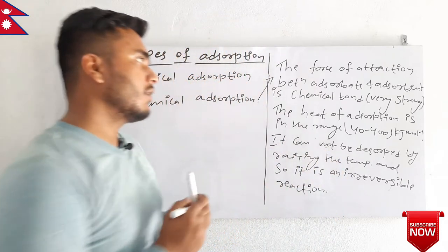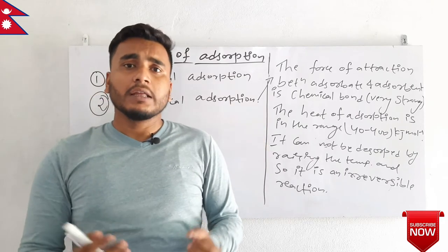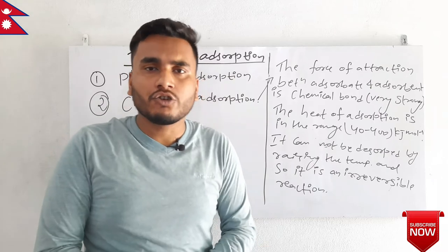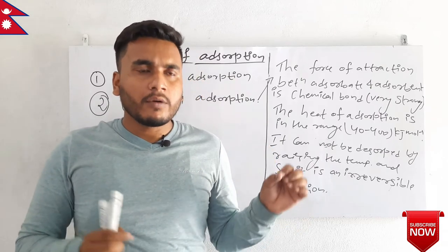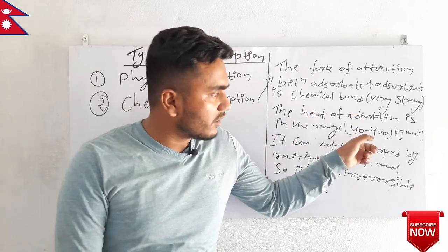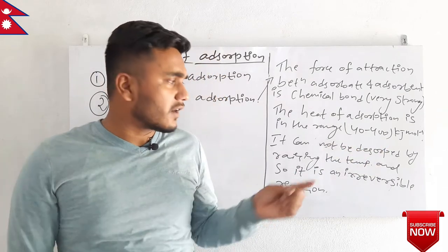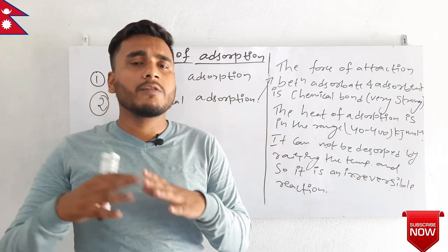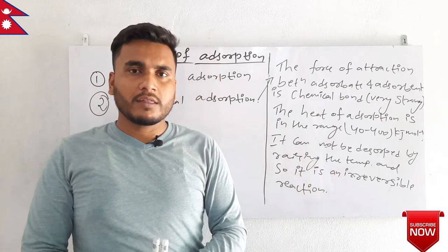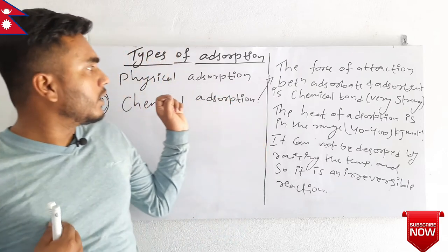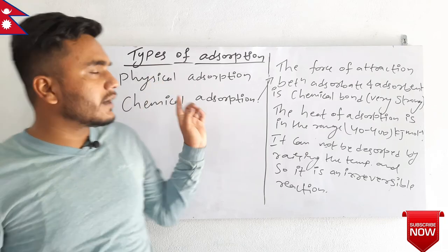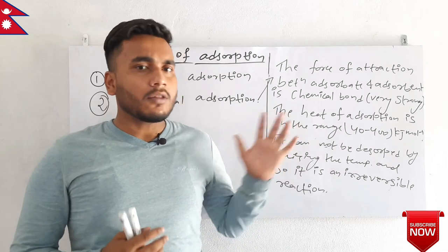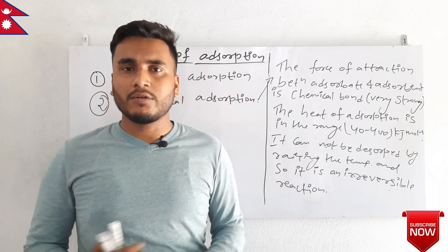So in chemical adsorption, the force of attraction between adsorbate and adsorbent is a very strong chemical bond. Its heat of adsorption is in the range of 40 to 400 kilojoule per mole — a very large value — so it cannot be dissolved by raising the temperature, making it an irreversible process. This is a very important topic in examinations, where questions often ask about the difference between physical adsorption and chemical adsorption. Thank you for watching the video.